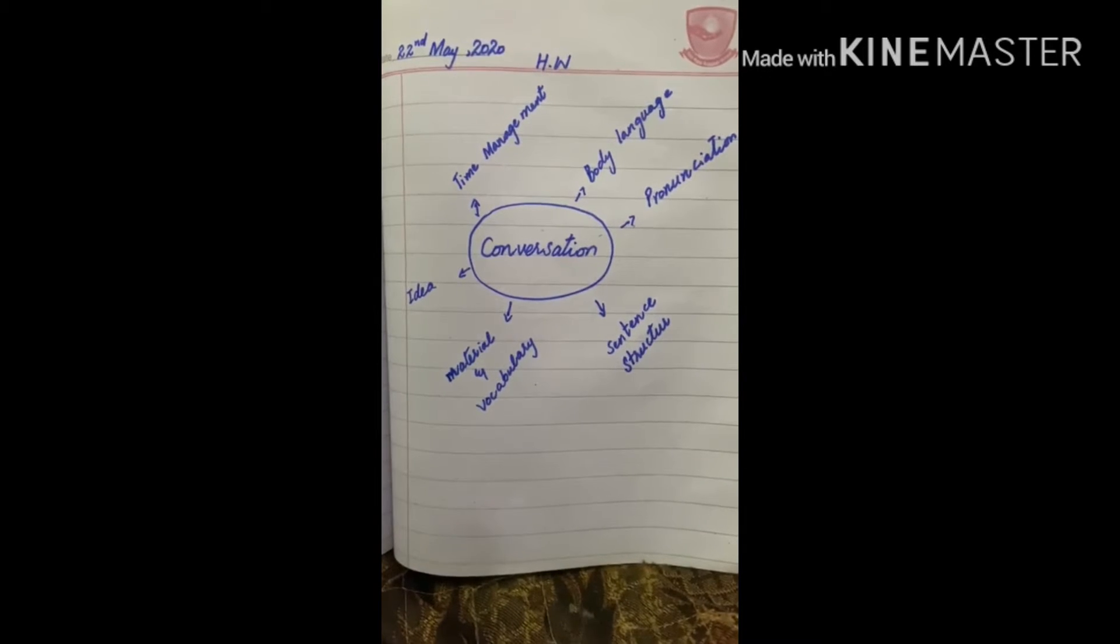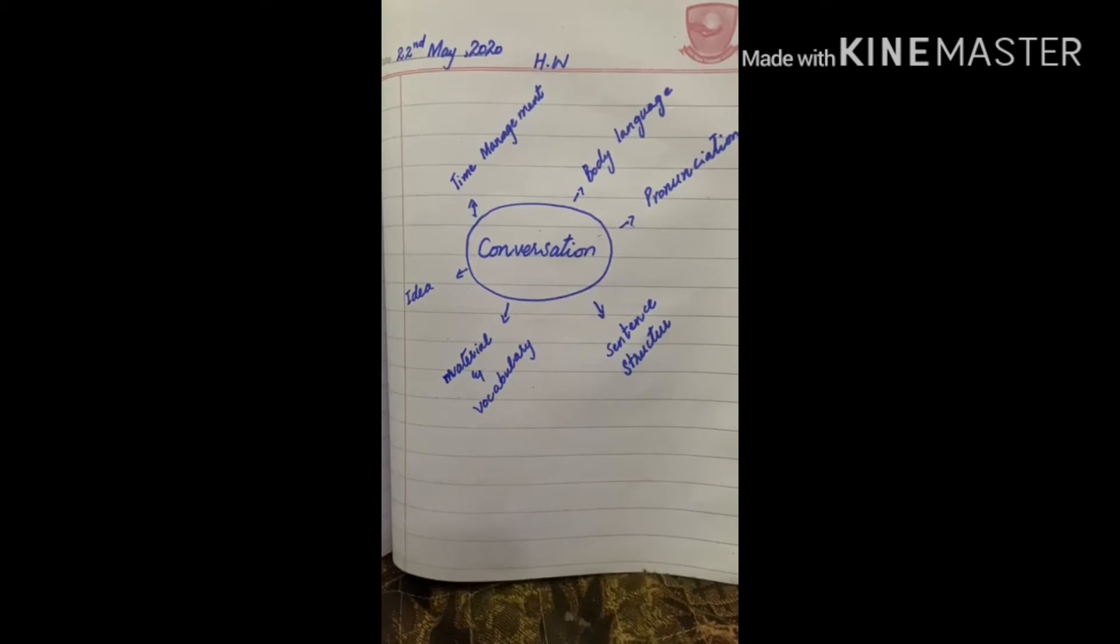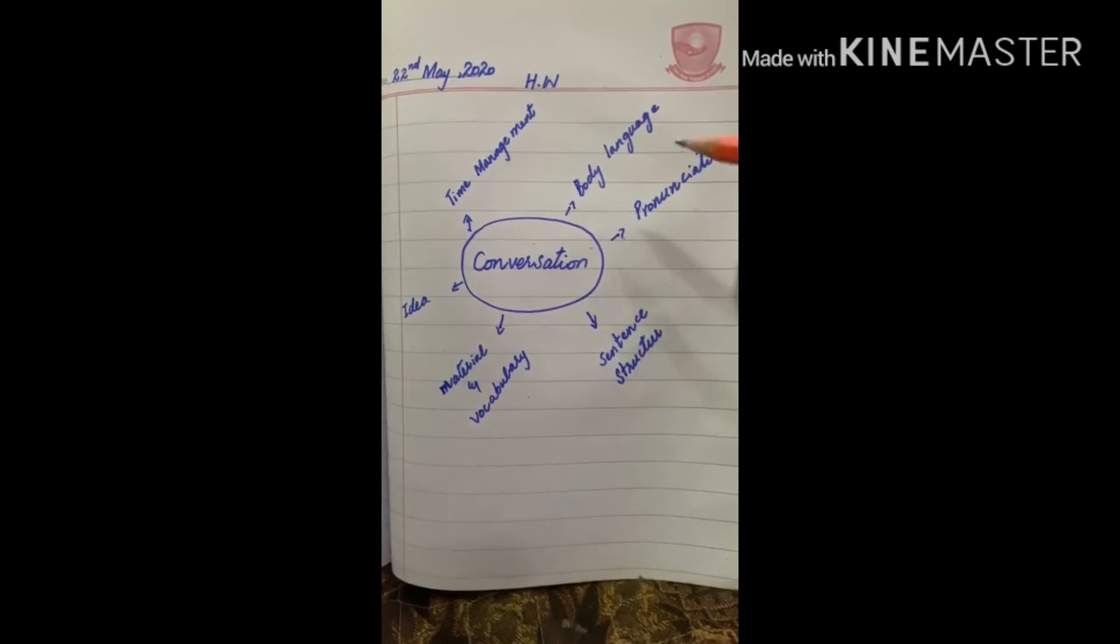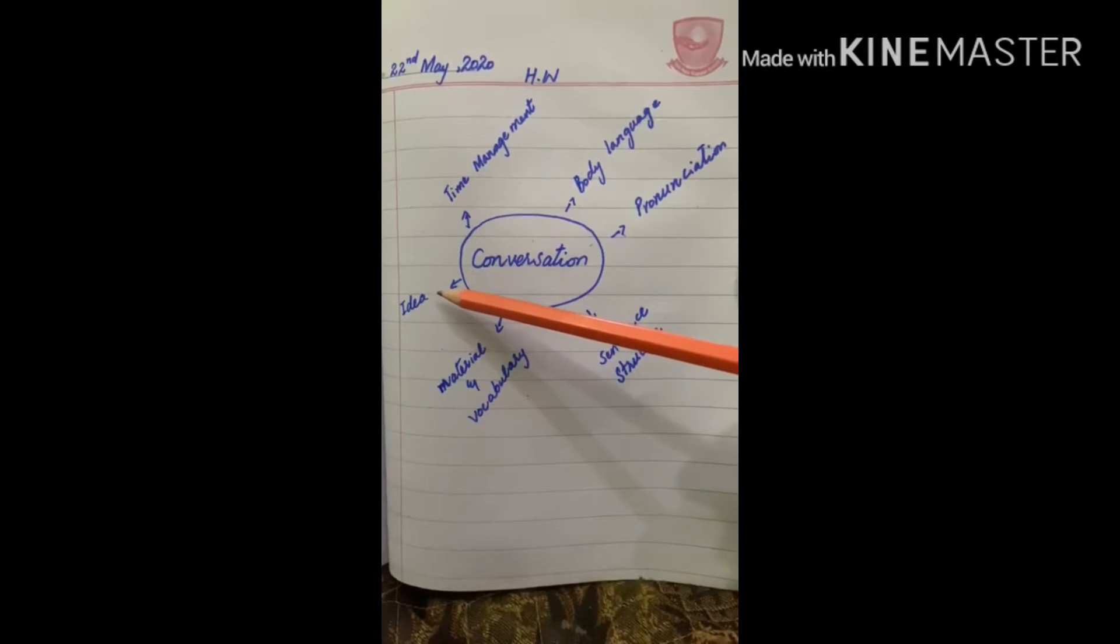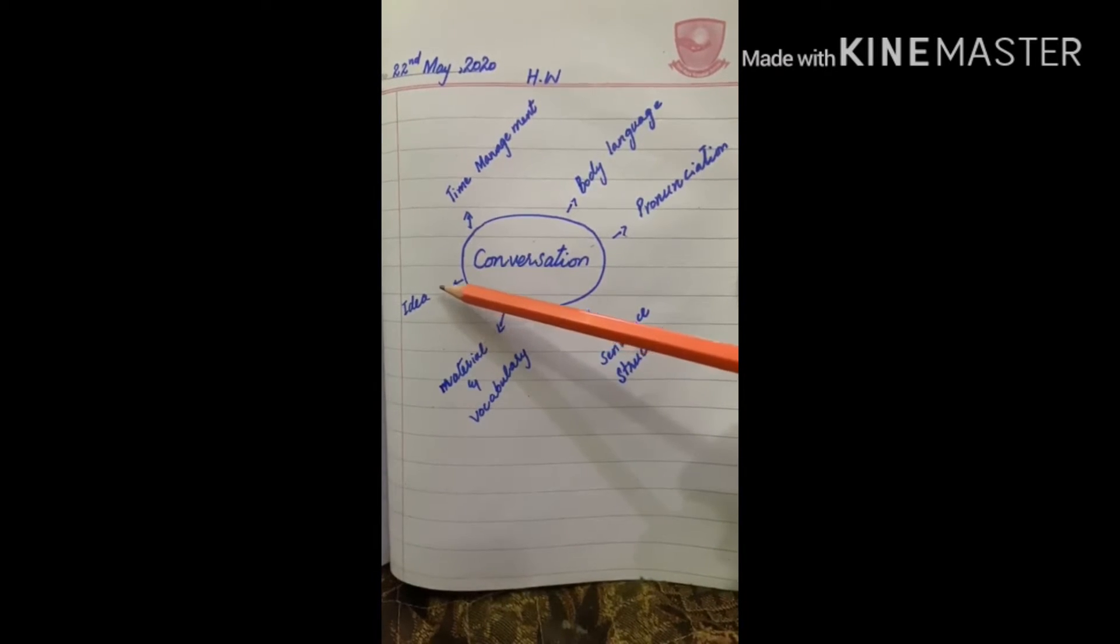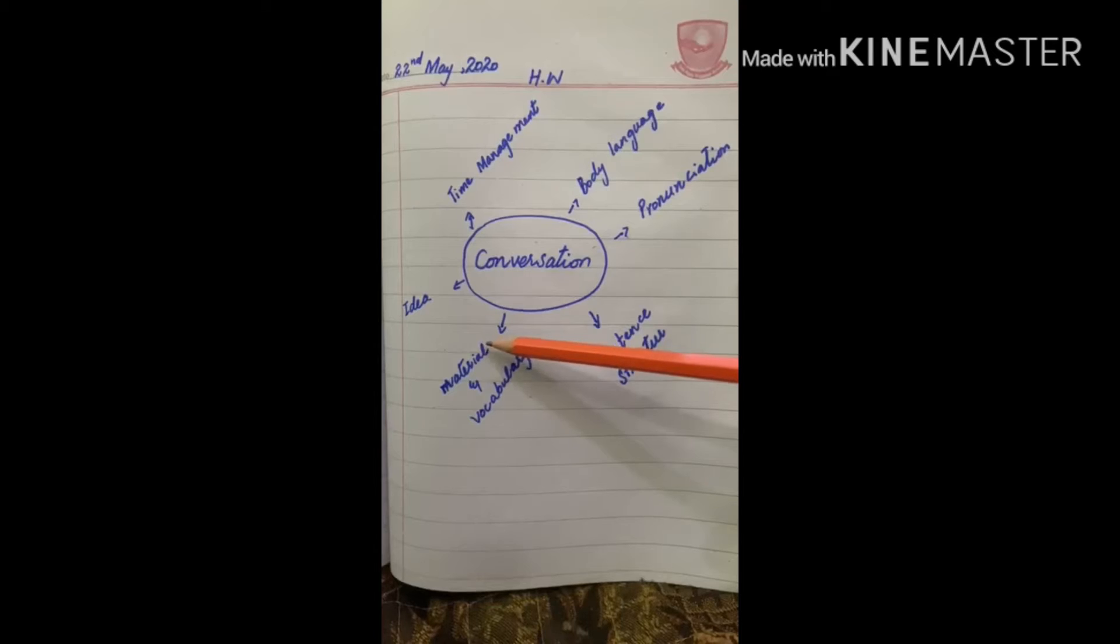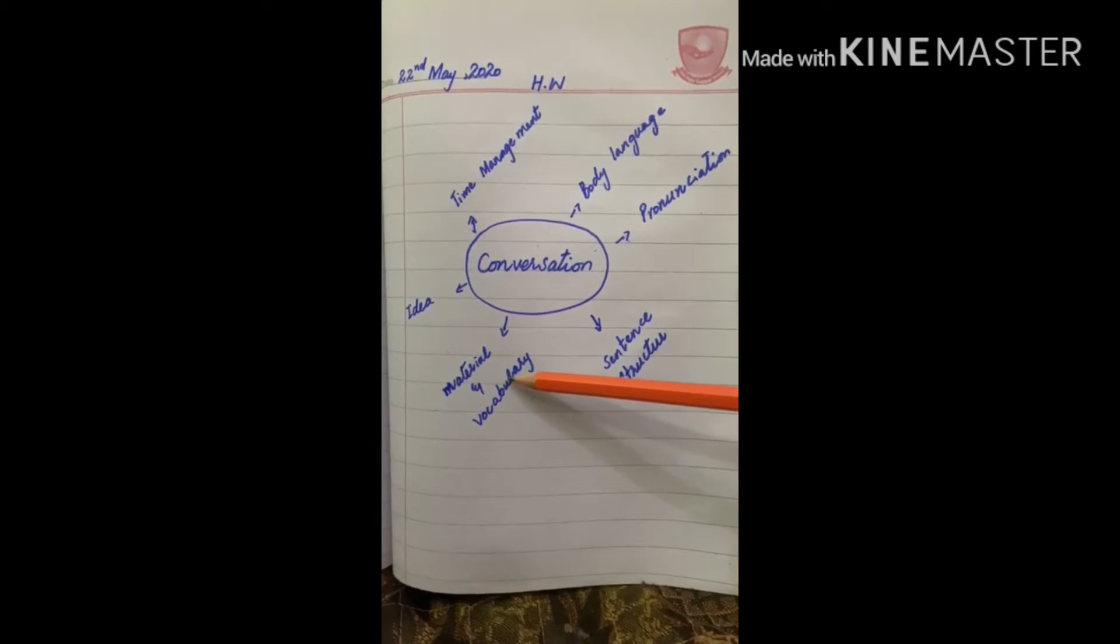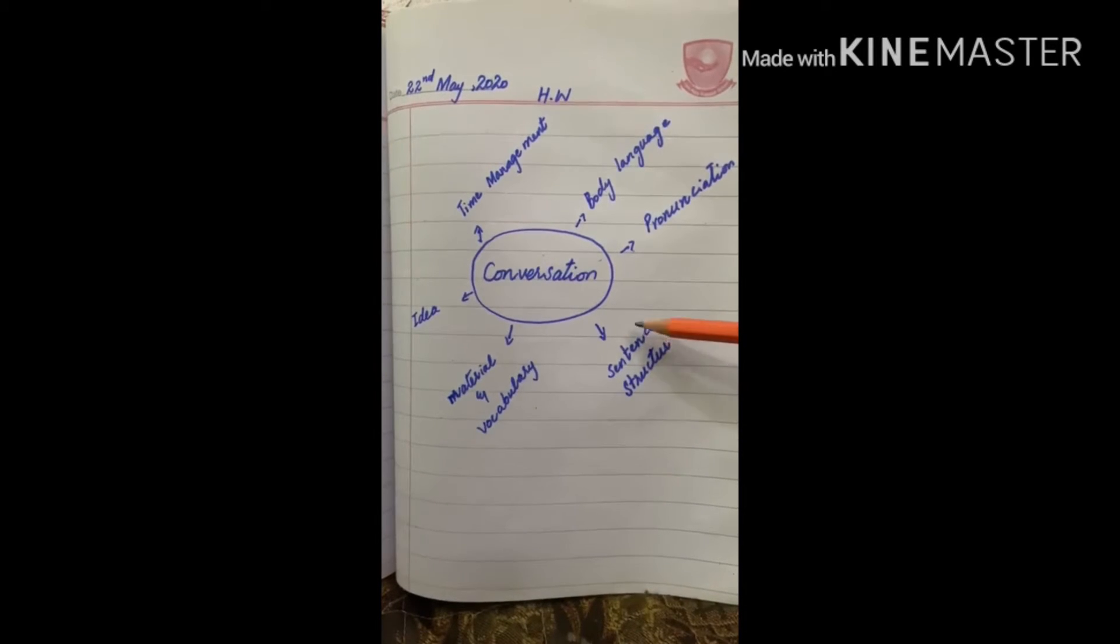To remove this hesitation, conversation practice is necessary. There are some points that one should keep in mind while conversing. The first one is idea - without an idea one is unable to converse and start communication with another person. After that, one must have relevant material and vocabulary about the idea.